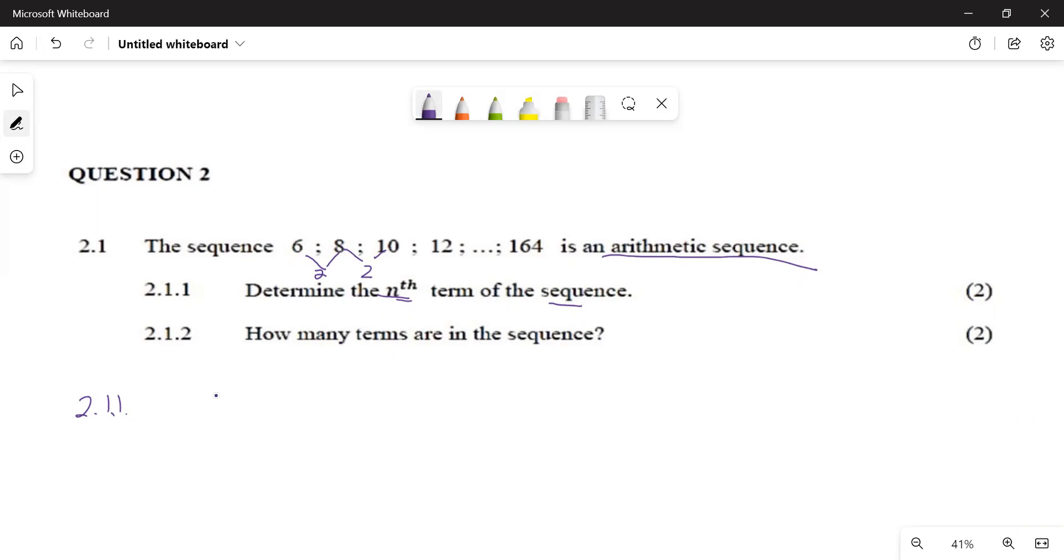You're going to say 4 plus 2n, like this, how do you get this one?